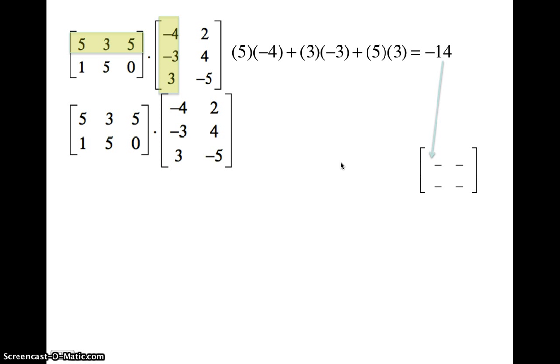We'll do it again this time with row one and column two. Again, three corresponding products. Five, two, three, four, five times negative five will be ten, plus 12, minus 25 is negative three. So we're going to put that right there.